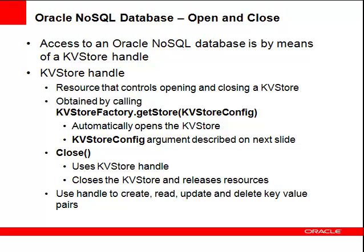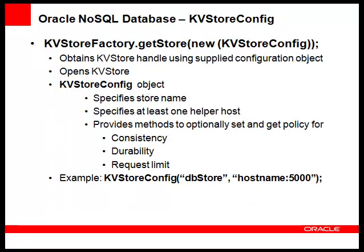You will frequently use the handle created to perform create, read, update, and delete operations from your kvStore. When you call the getStore method, you pass an instance of a kvStoreConfig object. You pass in the kvStore name and at least one hostname and port for an active node in the system. You might want to specify more than one in case that node is not active when the client application is started.